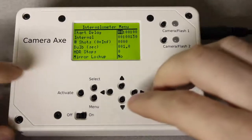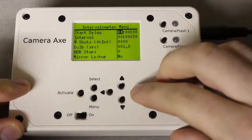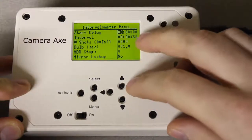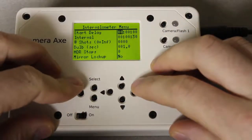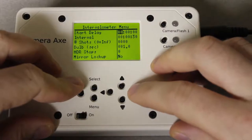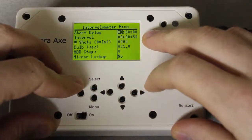So now we'll go over the actual menu settings. The first one is the start delay and that's the amount of time from when you hit activate, which will put it into the photo taking mode, until when the interval timer starts.